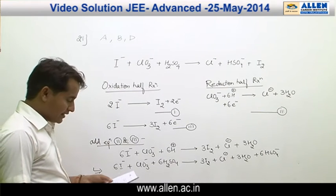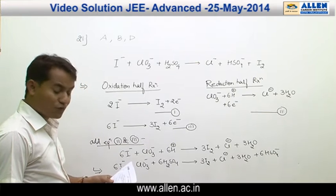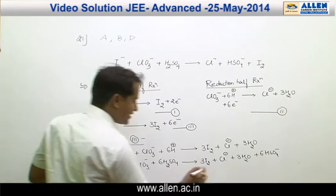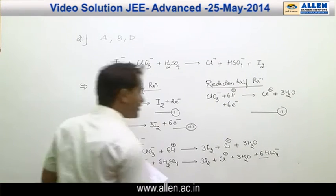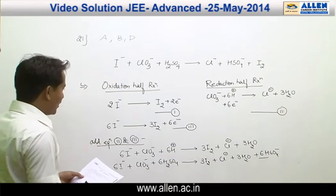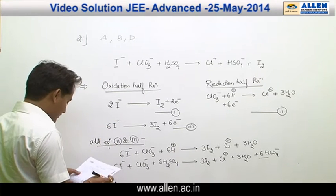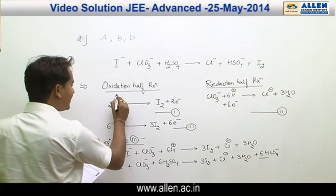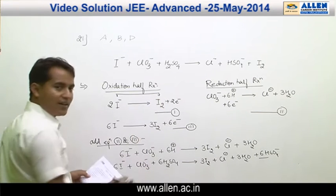Now, the first option is stoichiometric coefficient of HSO₄⁻ is 6. Here it is, the stoichiometric coefficient of HSO₄⁻ is 6. Iodine is oxidized, sorry iodide is oxidized. Here iodide ion is oxidized to I₂.